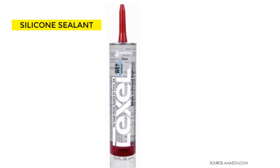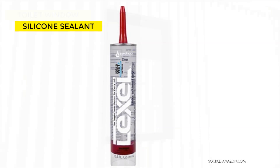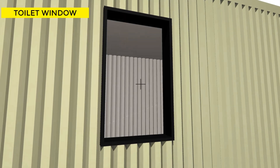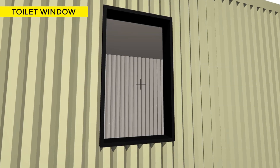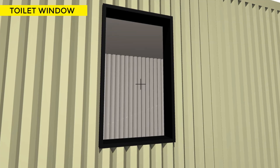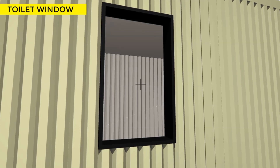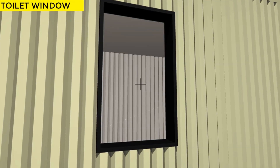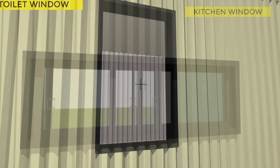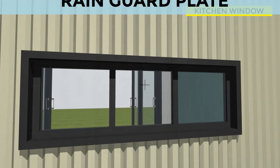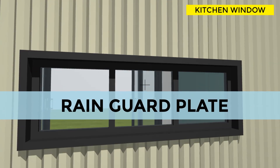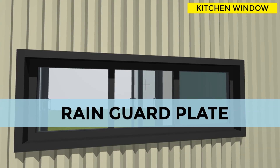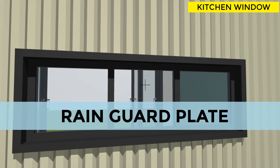Finally, use silicone and/or polyurethane to seal off any gaps around the window frame to make the opening watertight. Since water drips down the container wall when it rains, chances of water getting into your house are very high. Remember to add rain gutters on all your windows on any shipping container house.